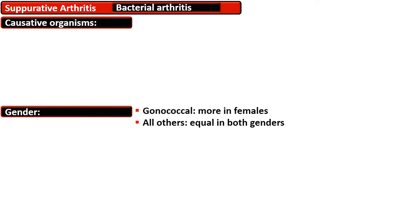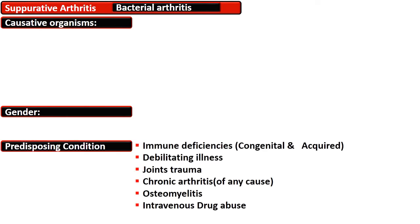Gonococci are more commonly isolated from females with septic arthritis. All other organisms are equal in both genders. Predisposing conditions include immune deficiencies (both congenital and acquired), debilitating illness, joint trauma, chronic osteoarthritis of any cause, osteomyelitis, and intravenous drug abuse.